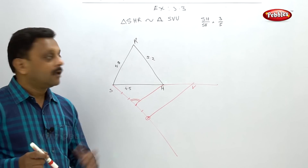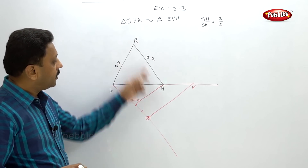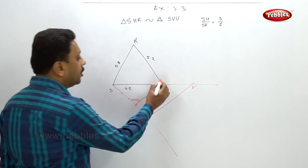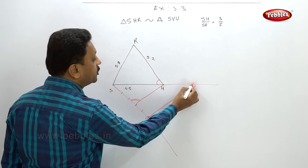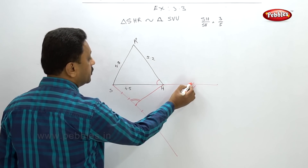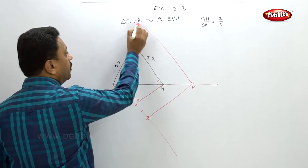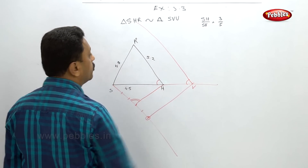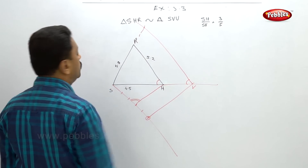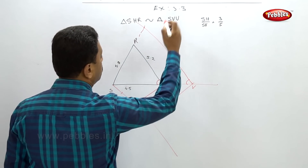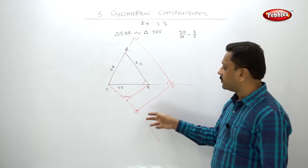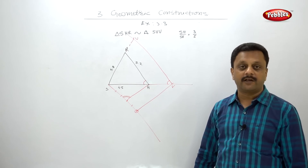Now to find point U, draw a congruent angle to this angle at the corresponding point, then extend that line. This gives you point U. Very simple — you just have to draw two congruent angles and nothing difficult.